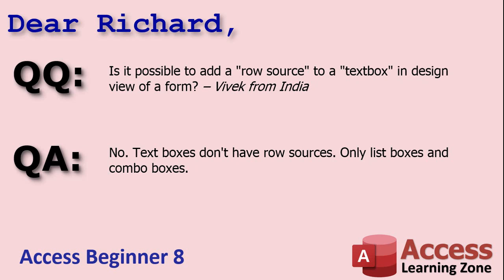The first question is from Vivek from India. Vivek asks: is it possible to add a row source to a text box in design view of a form? No — row sources are for combo boxes and list boxes. The row source indicates where that list box or combo box is getting its data from. A text box just holds a single bit of data, like a first name or a last name. A customer combo box will give you a list of customers from the customer table, or you can do a static list of states or genders. Row sources are for list boxes and combo boxes. I cover row sources in my Access Beginner 8 class.